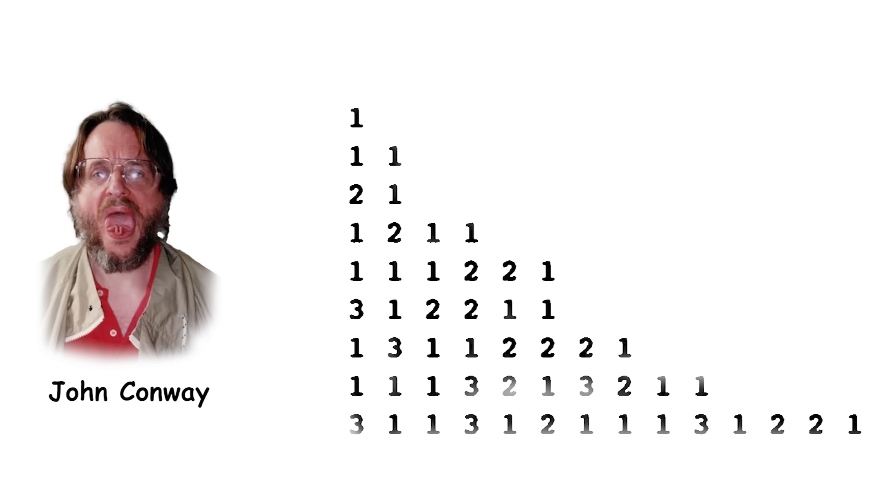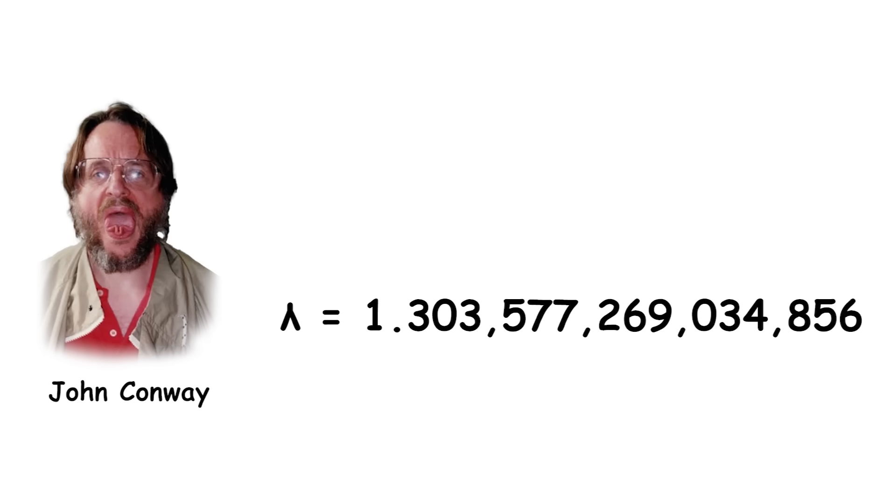The first few terms of the sequence are 1, 11, 21, 1211, and some very long numbers. The constant lambda is the exponential growth rate of the length of the terms in this sequence as the sequence progresses. The value of lambda is approximately 1.303, and it is an irrational number, meaning it cannot be expressed as a ratio of two integers.